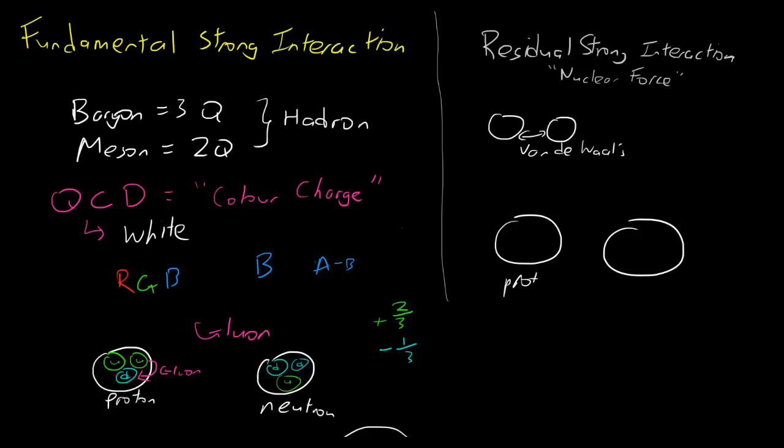So between color neutral hadrons, like a proton and a neutron, there is still this little bit of residual color charge that is binding them together. And this is what contains the protons and neutrons together in the atom of the nucleus. So we have protons and neutrons in here because they are bound together by the residual strong interaction, or what we commonly call as the nuclear force.